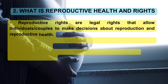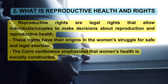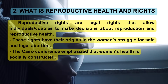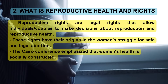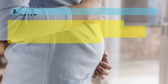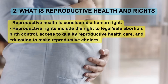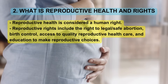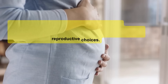What is Reproductive Health and Rights? Reproductive rights are legal rights that allow individuals and couples to make decisions about reproduction and reproductive health. These rights have their origins in the women's struggle for safe and legal abortion. The Cairo Conference emphasized that women's health is socially constructed. Reproductive health is considered a human right. Reproductive rights include the right to legal, safe abortion, birth control, access to quality reproductive health care, and education to make reproductive choices.